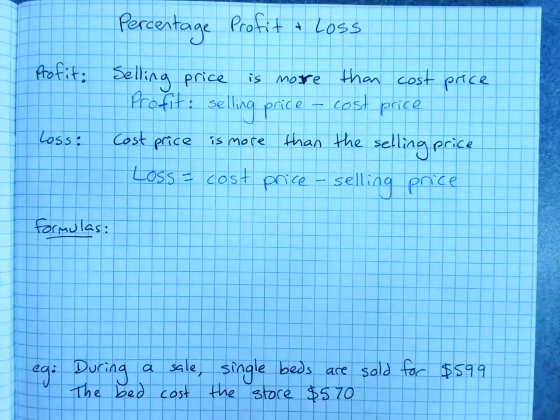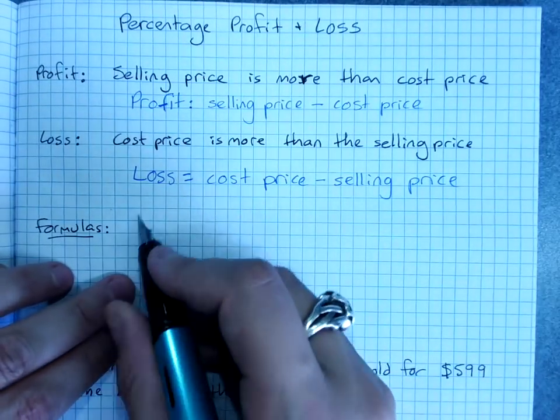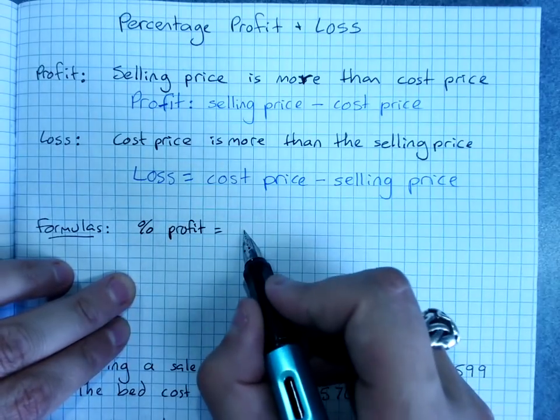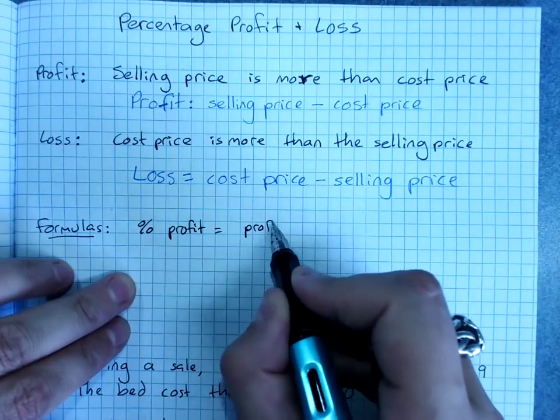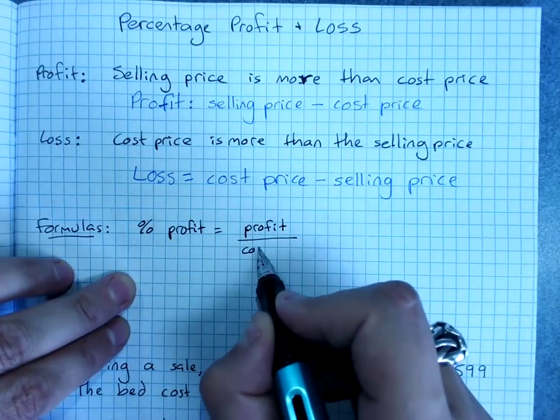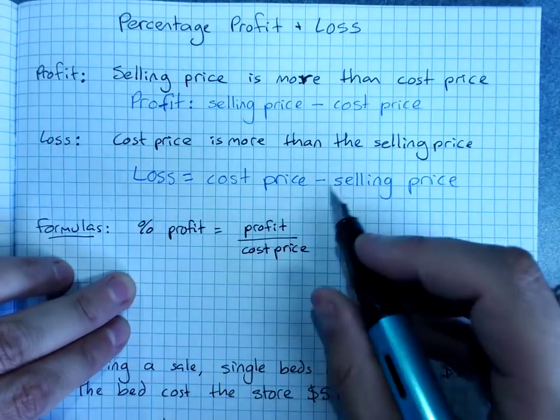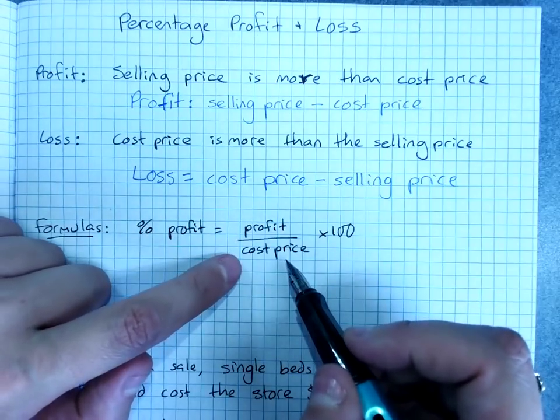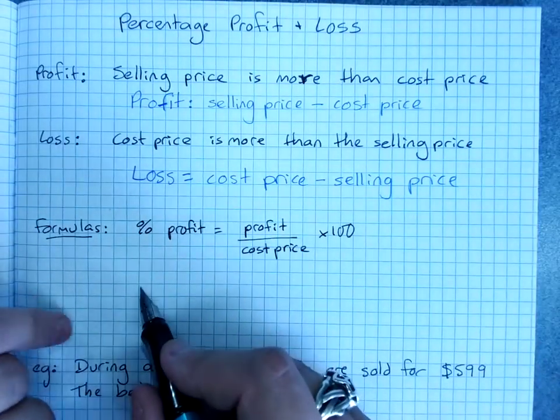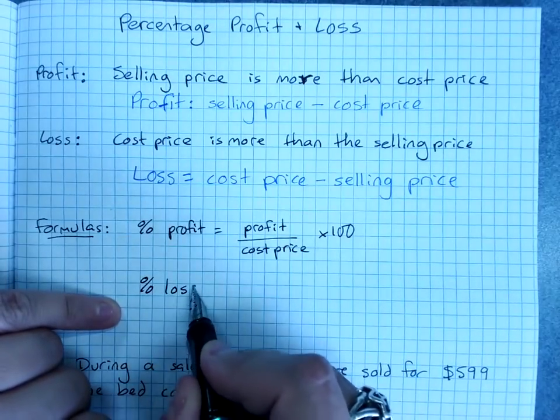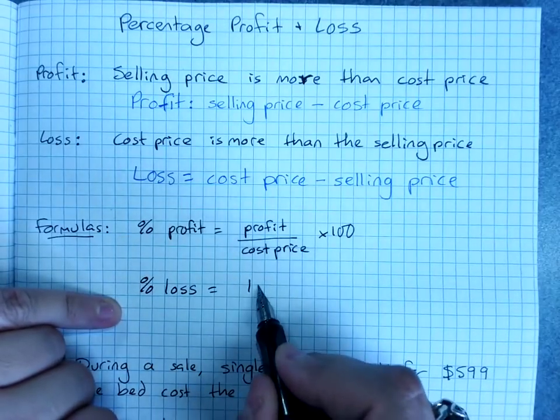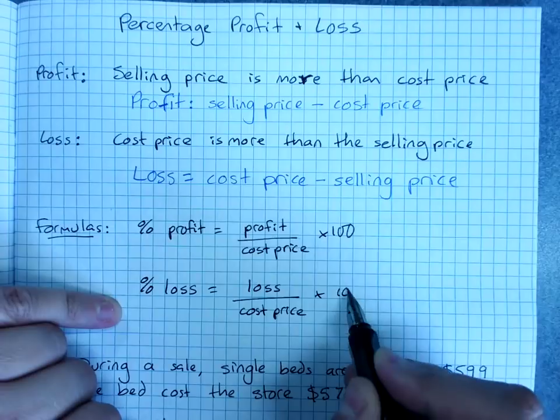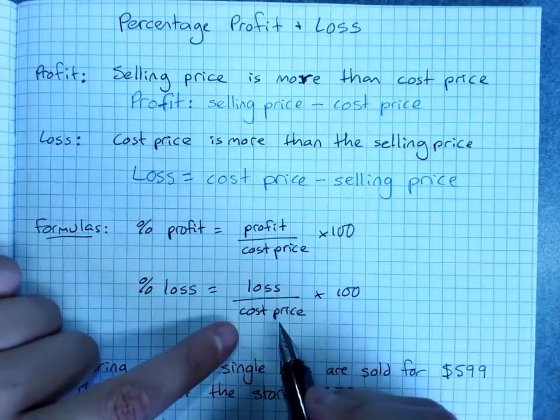And the formula for percentage profit is the amount of profit over the cost price times 100. So it's what percentage of the cost price did you get extra in profit. And percentage loss is your loss amount over the cost price times 100. What percentage of the original price did you lose?